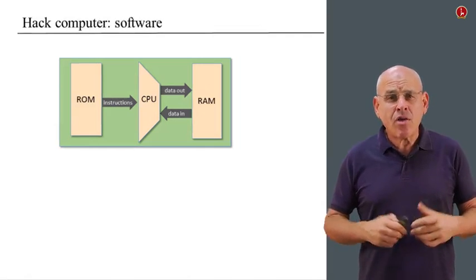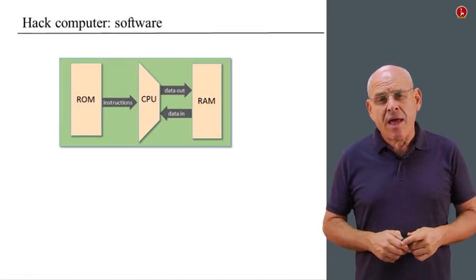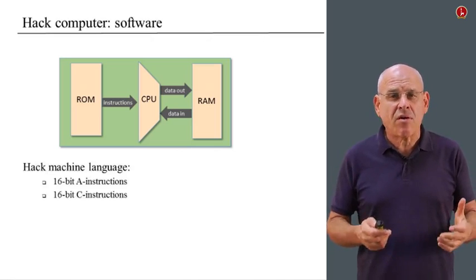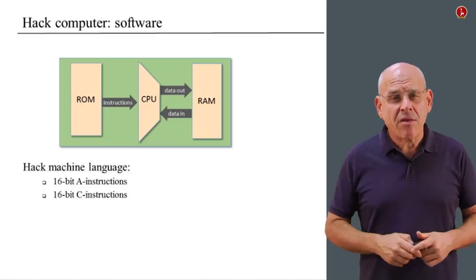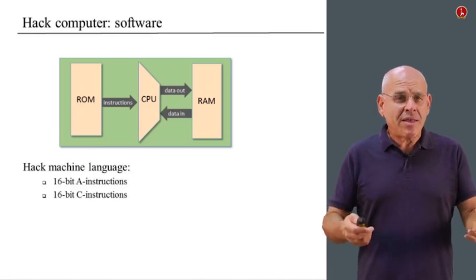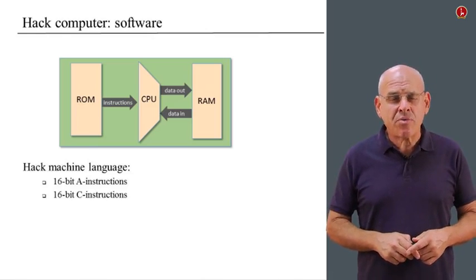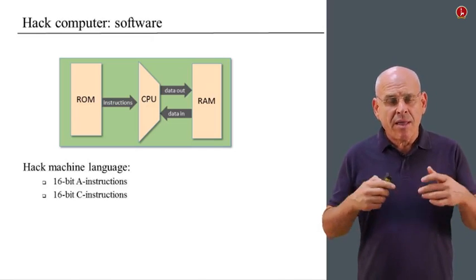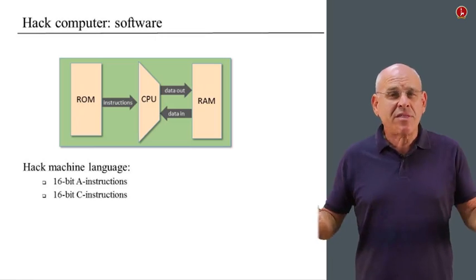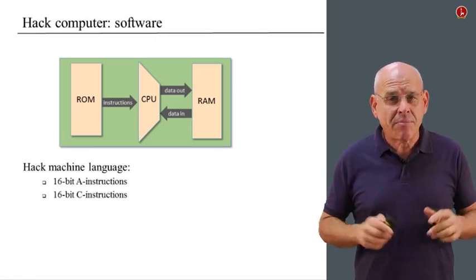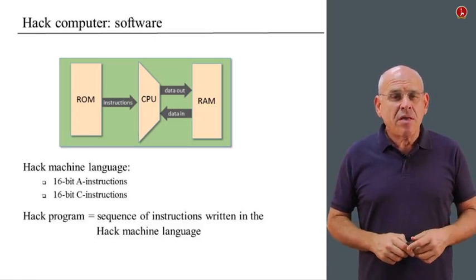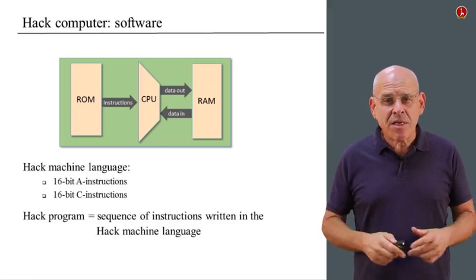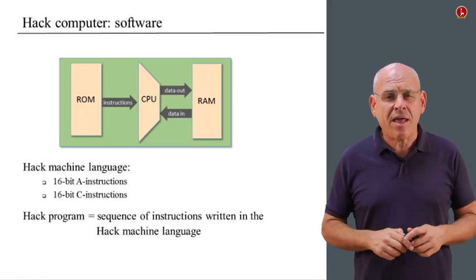All right, so how do we control this computer? Well, we have software. And the software is in this level of the machine. The software consists of machine language or the program that we write using machine language. And when we designed this computer and when we designed this machine language, we decided to create two categories of instructions which we call A instructions and C instructions. And each one of these instructions is specified as a 16-bit number, like everything else in this machine.